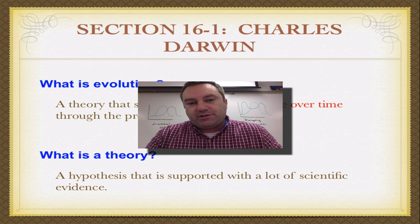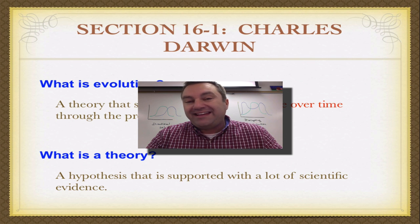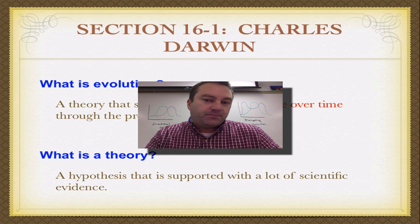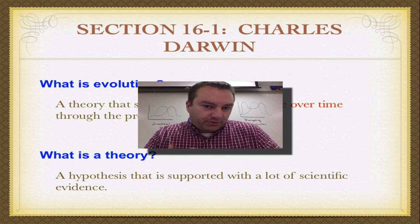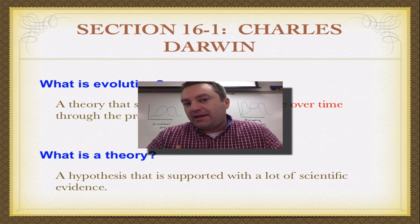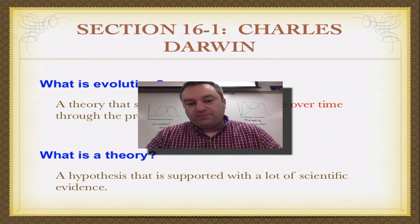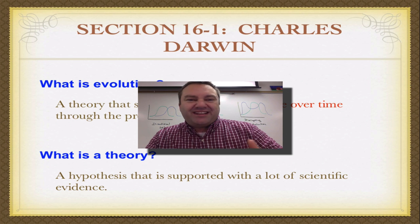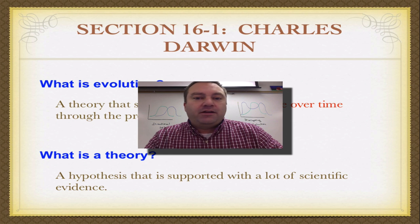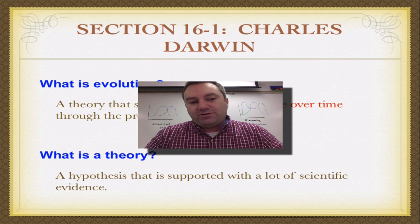Welcome to our first episode from our first series on evolution. This series is going to focus on how Charles Darwin came up with his theory of evolution, what influenced him to come to this theory, and what were some of the evidence to back him up. We'll also have a second series on evolution where we deal with the genetics behind how evolution happens. So let's learn about Charles Darwin.